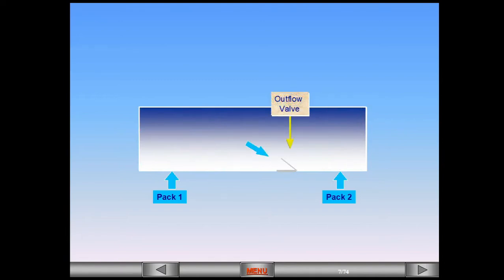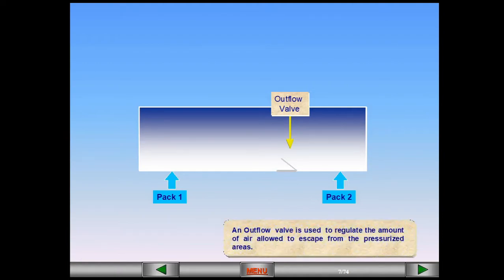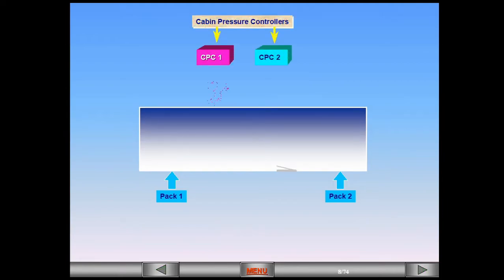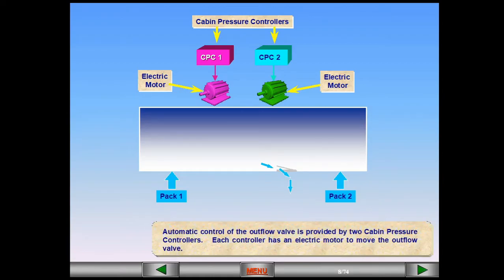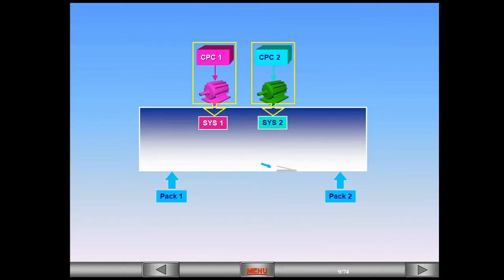An outflow valve is used to regulate the amount of air allowed to escape from the pressurized areas. Automatic control of the outflow valve is provided by two cabin pressure controllers. Each controller has an electric motor to move the outflow valve. A controller-motor combination is known as a system. Only one system will operate at any one time, with the other system acting as a backup.